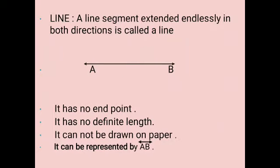Next definition, line. A line segment extended endlessly in both directions is called a line. The properties of line: it has no endpoint, it has no definite length, it cannot be drawn on paper, and it can be represented by AB with the sign of line.